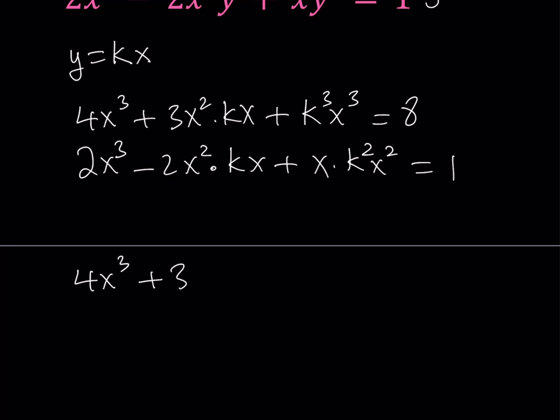So it's going to be 3kx³. And then from here I'm getting k³x³ equals 8. In the second equation we get 2x³ minus 2kx³ plus k²x³. And that is equal to 1.